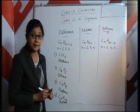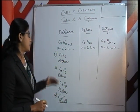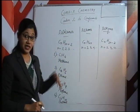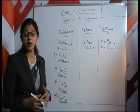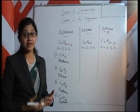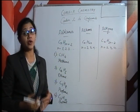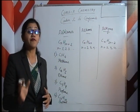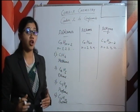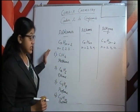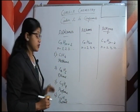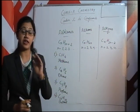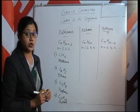So the first alkane is methane, then ethane, propane, butane. If you want to know more: pentane, hexane, heptane, octane, nonane, and decane. From methane up to decane — n equals 1 to 10 — you have to learn them in chronological order. Till decane it is mandatory to learn.